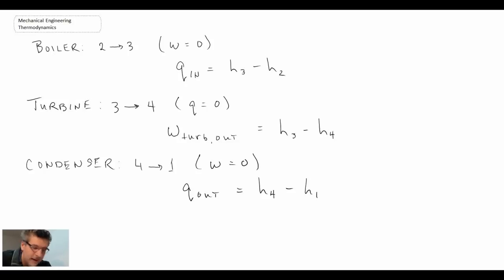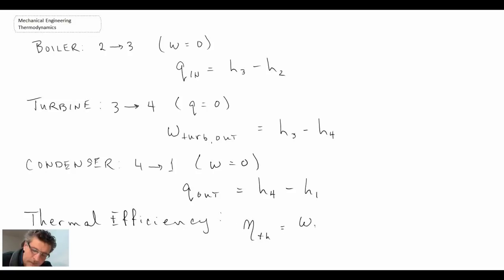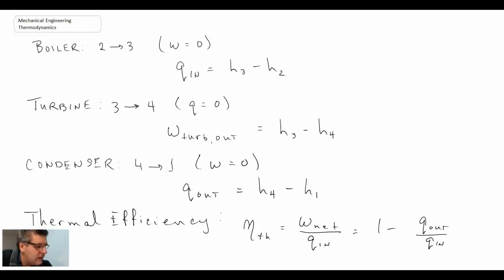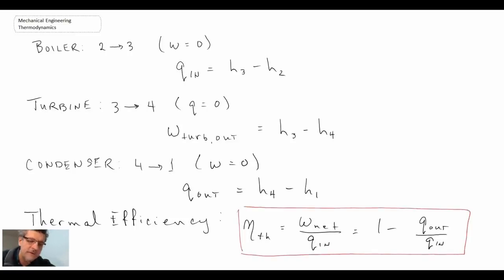Those are all the equations we can use to examine each individual component within the Rankine cycle. The thermal efficiency can be calculated using the standard expression. If given a Rankine cycle problem, you determine all the different enthalpies, plug them into these equations, evaluate both work terms — turbine output and pump input — as well as the heat in, and from that determine the thermal efficiency. We'll now go into more detail looking at how each individual component performs within the Rankine cycle.